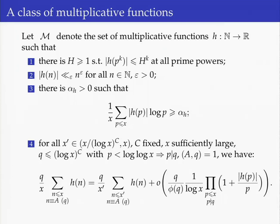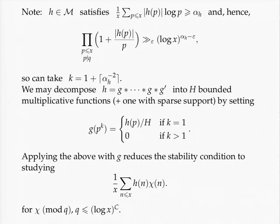There is some more information we can use. In condition three, we assume the sequence of h evaluated along primes has some density. This lower bound can be used to obtain a lower bound on the product over primes — importantly, q is fairly small here. Using this lower bound, we find the product over primes comes with a constant exponent alpha_h for the logarithm. So if we allow sufficiently many characters in the expansion with respect to this constant alpha_h, the error term can be included in the condition. From looking at the error term, this seems fine.